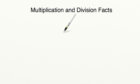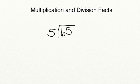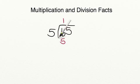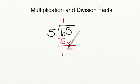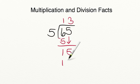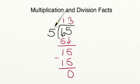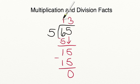Can you tell me the quotient of 65 divided by 5? Let's get started. First step: 5 can go into 6 one time. 5 times 1 equals 5; we subtract out, 6 minus 5 equals 1. We drop down our 5. Then 5 can go into 15 three times — 5 times 3 equals 15, and we subtract out to 0. So 65 divided by 5 equals 13. And from our multiplication tables, we can also say 5 times 13 equals 65.